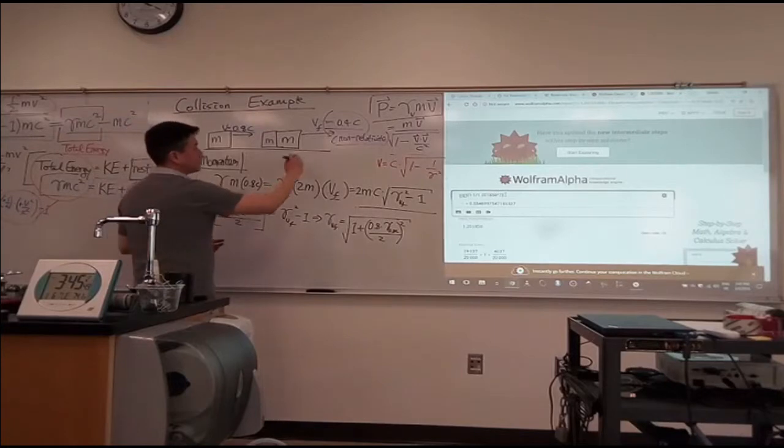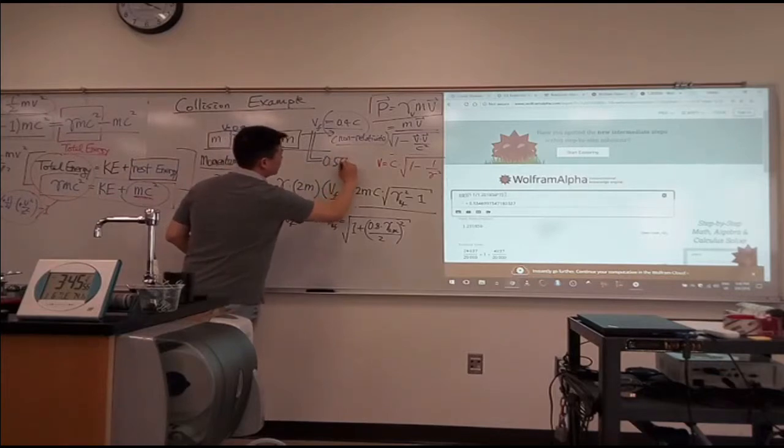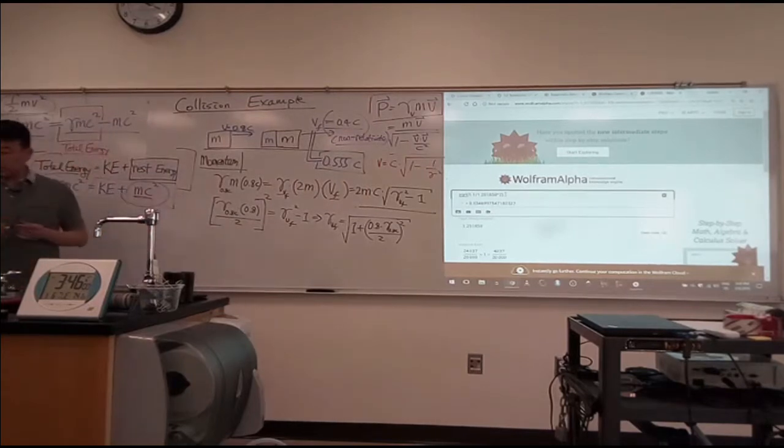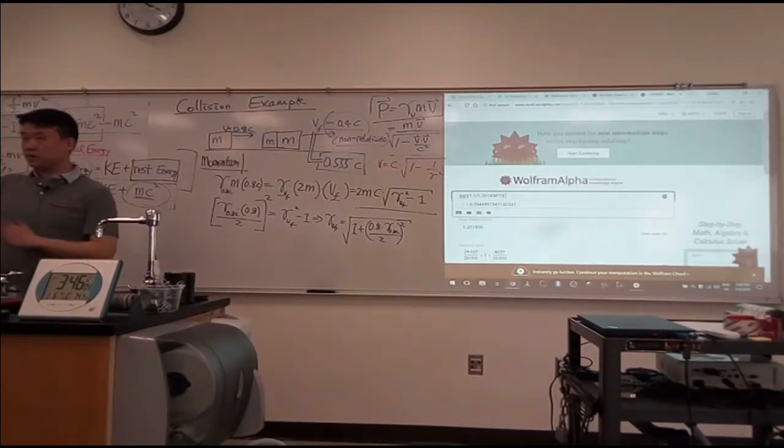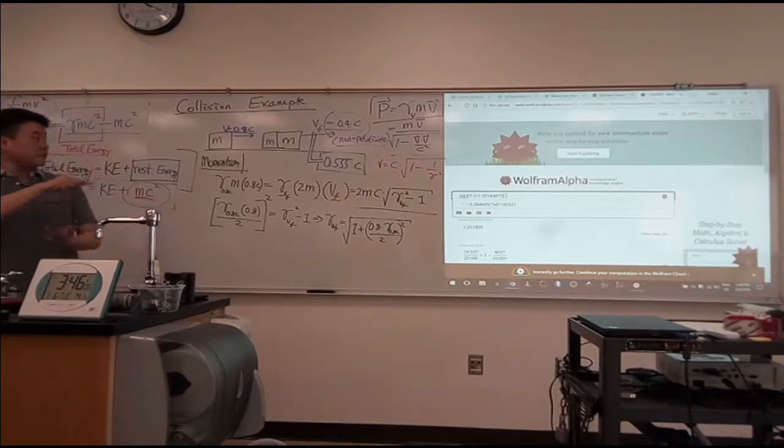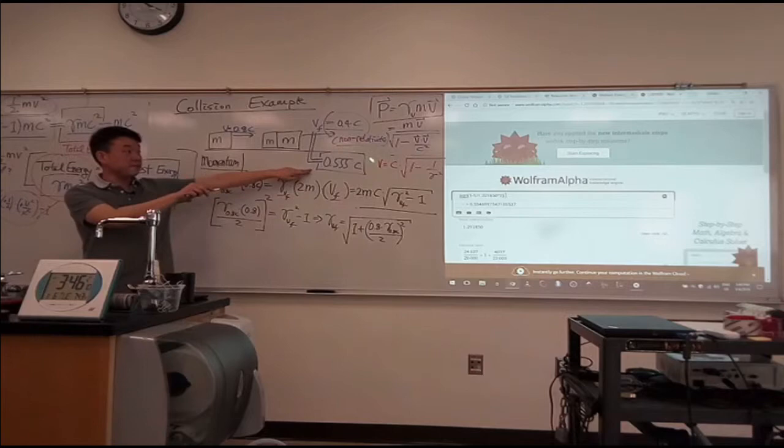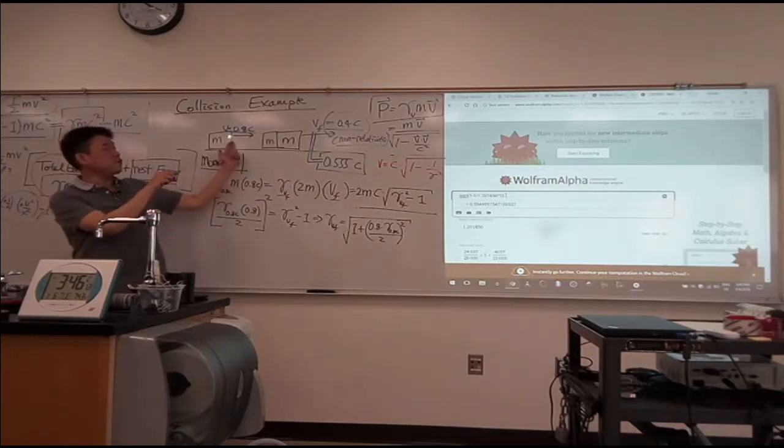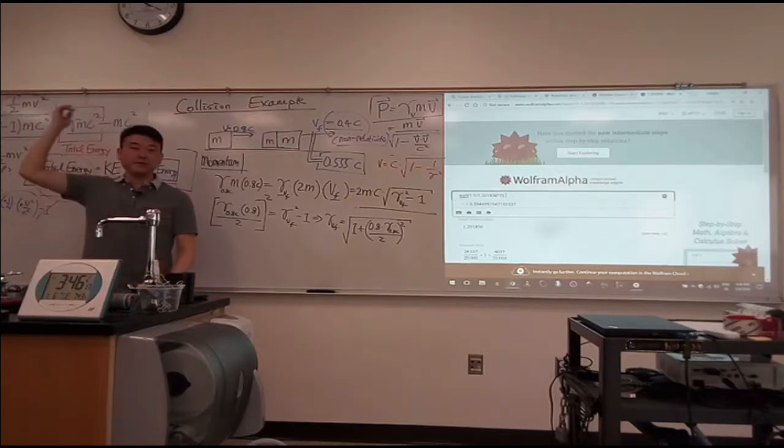The relativistically correct version says V final is 0.555C. So we already get one result that what you would have guessed from your non-relativistic intuition is not correct. You get something that's substantially different.